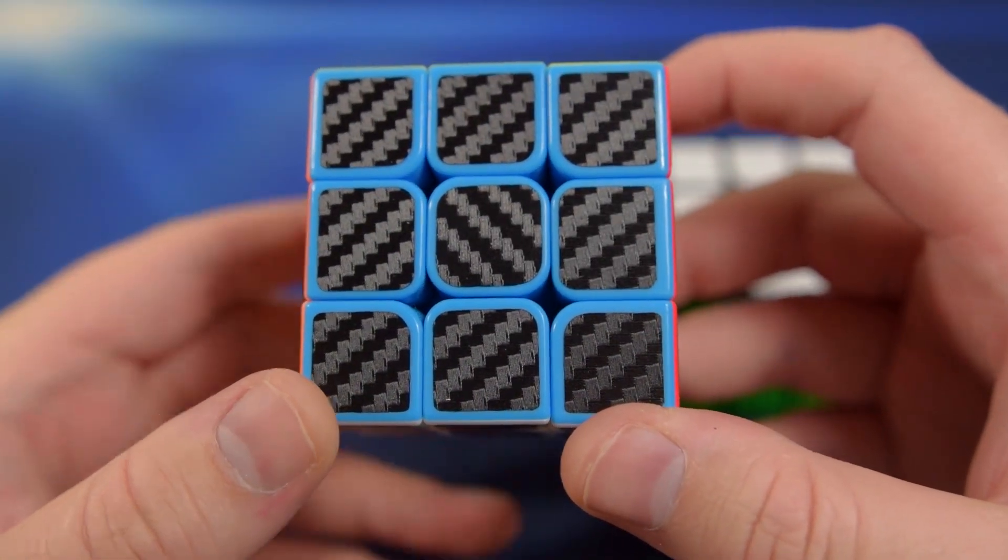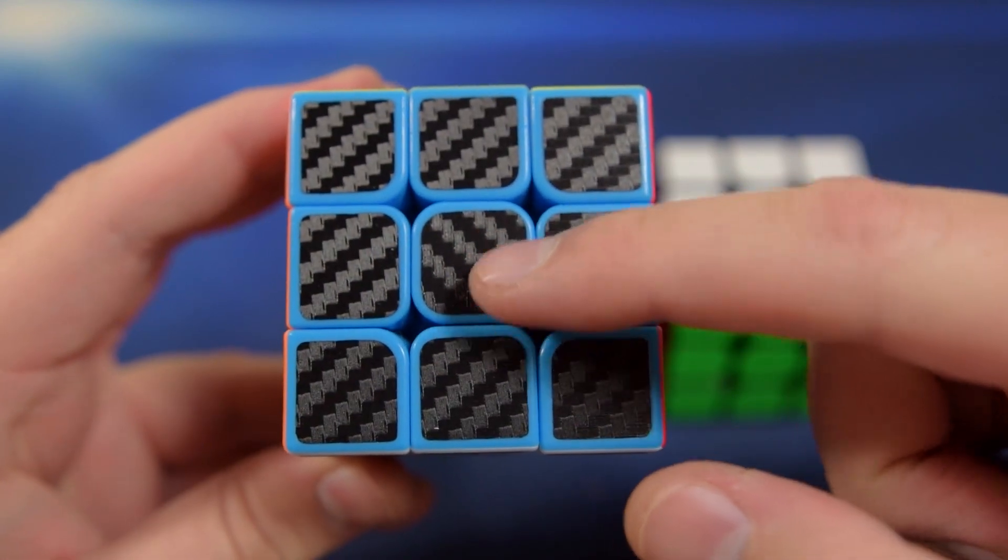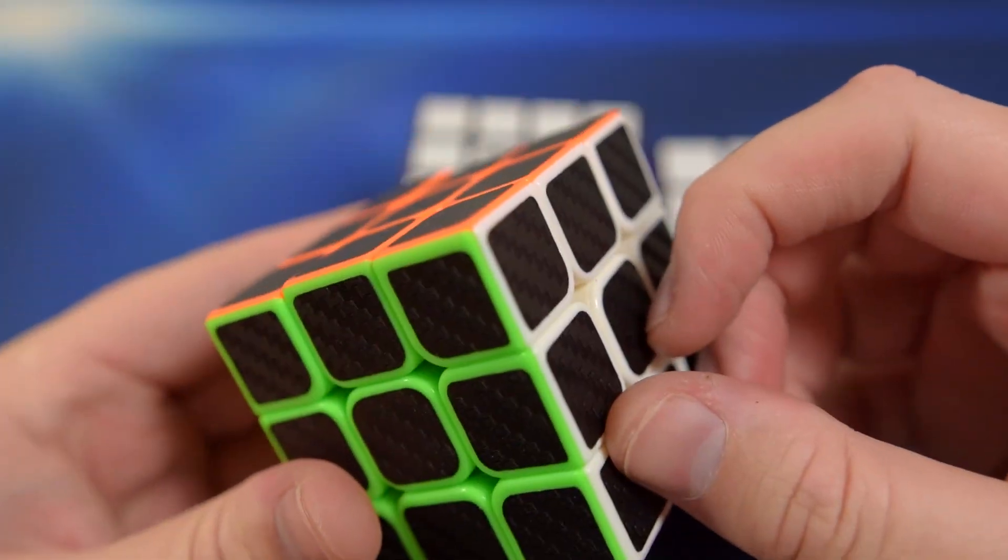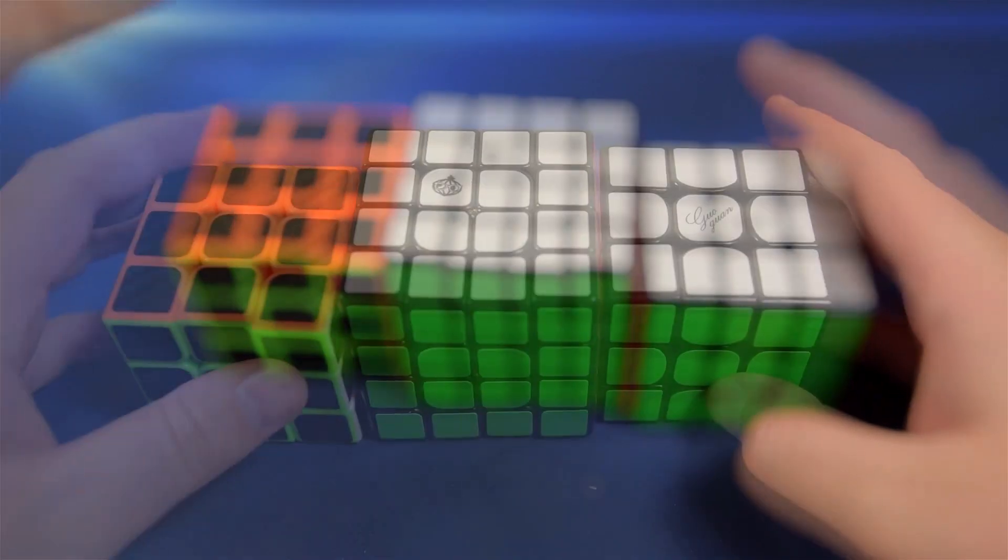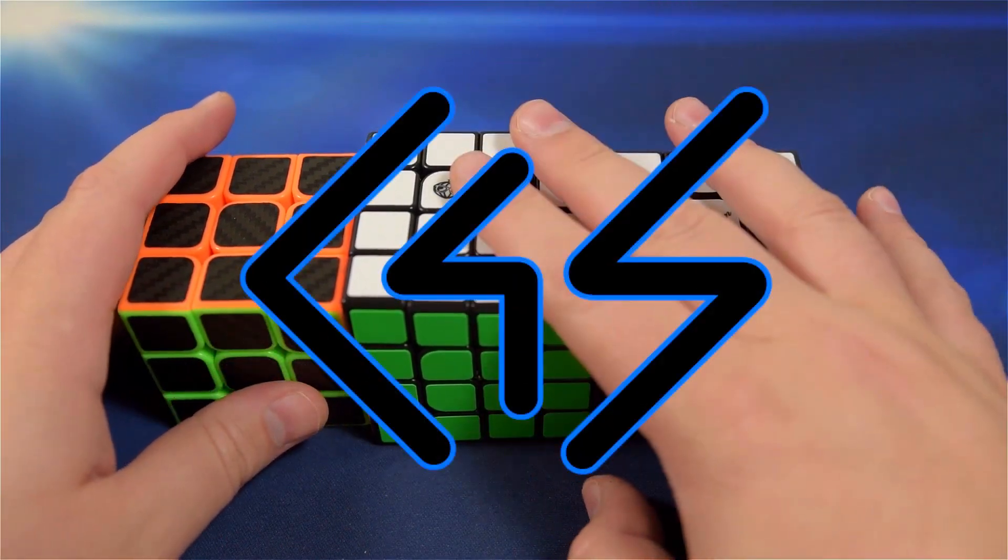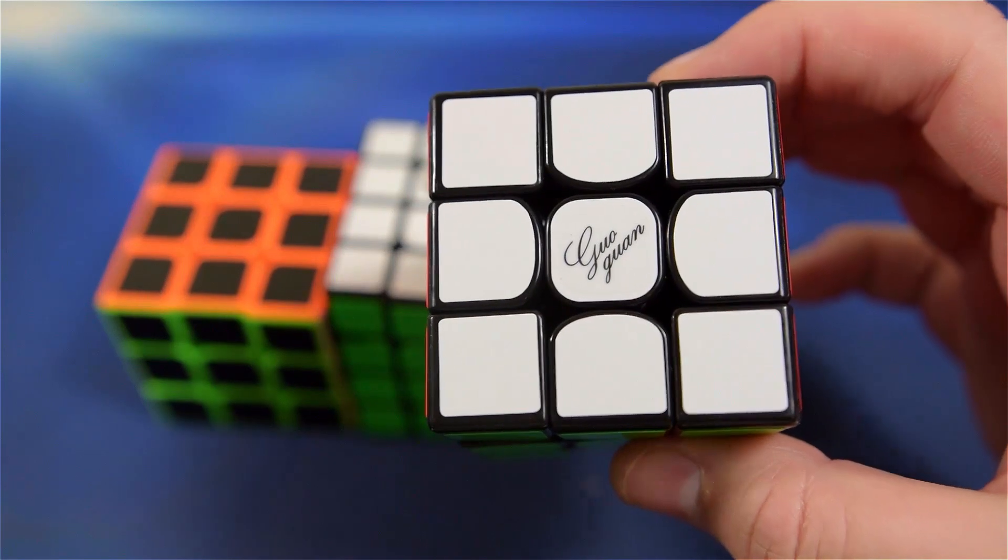And as far as this Yulong Studio Cube with the textured stickers, it's a pretty cool novelty and I love that I have it in my collection. I'm going to have to solve these or twist these centers so they go the same way. I will have more videos on that for sure. But thanks again to Cubes for Speed for sending this over.